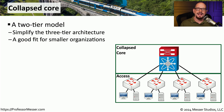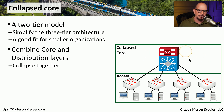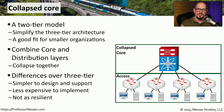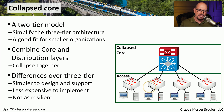If you're a smaller organization, there may not be a need for a full three-tiered architecture. Instead, you might want to use a collapsed core architecture — a two-tier architecture that combines the core and distribution layer into a single collapsed core, while the access layer remains exactly the same. This allows for a more simplified design and easier troubleshooting. It is also a lot less expensive to implement because you have fewer devices to purchase and install. However, as you can see in this diagram, there are not many options for redundancy, so this may not be quite as resilient if you lose any individual components.